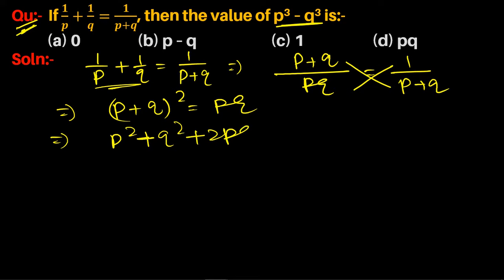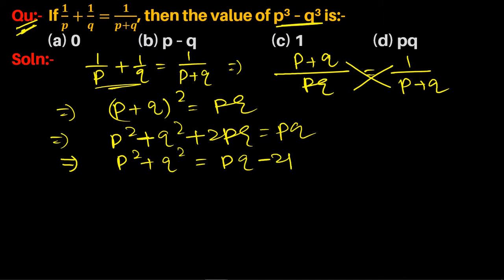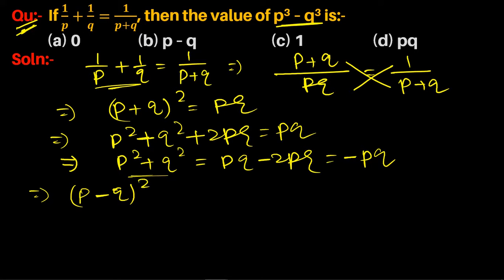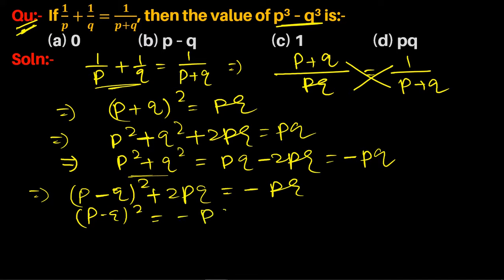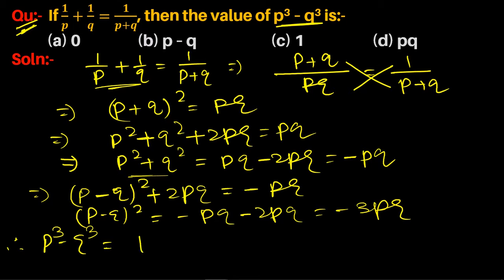Simplifying: p² + 2pq + q² = pq, so p² + q² = pq - 2pq = -pq. Using the identity (p - q)² = p² - 2pq + q², we substitute: (p - q)² + 2pq = -pq, so (p - q)² = -pq - 2pq = -3pq.